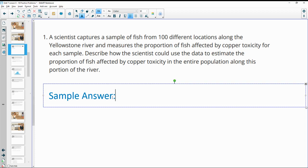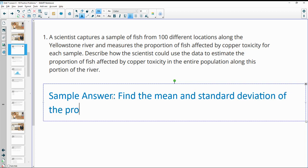So this is just a sample answer. Yours can certainly vary from mine, but this is just an example. So the scientist could find the mean and standard deviation of the proportions. Then he could use the margin of error,